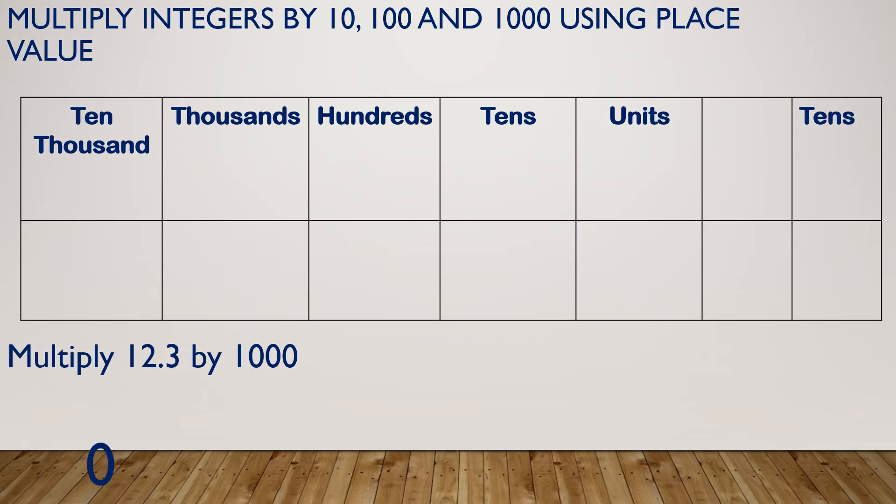So let's have another look. If I was multiplying 12.3 by 1000. So 12.3, again, I've got my 1 ten, 2 units, 3 tenths. So when I'm multiplying 12.3 by 1000, I've got 1, 2, 3 zeros. So everything is moving 1, 2, 3 spaces. So my 10 instead of being a 10 is now a 10,000. My 2 instead of being a unit is now a 100.